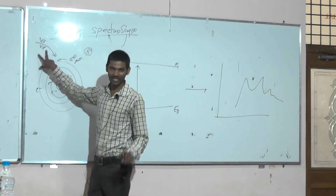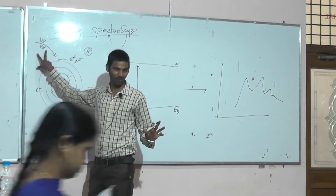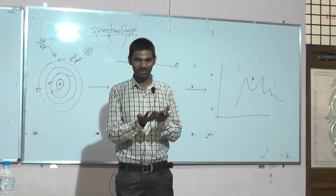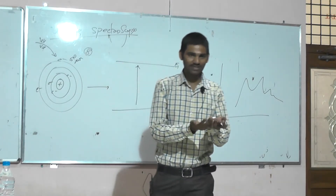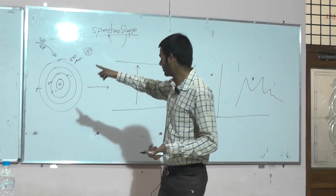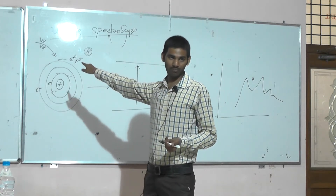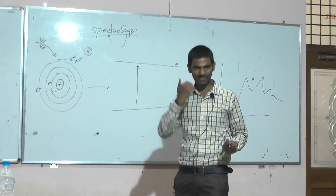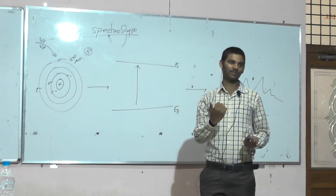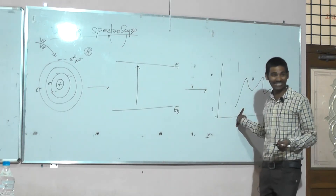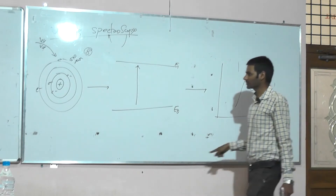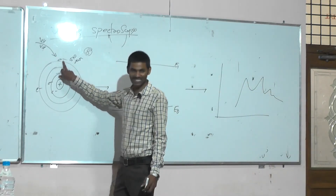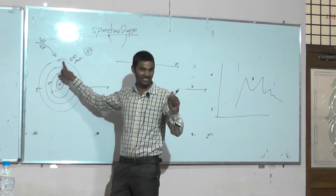The valency electron absorbs the radiation. But if I have 10 compounds, will 10 compounds give the same spectra and absorb the same energy? No. Based on the property of the compound, it absorbs a specific amount of energy and gives corresponding characteristic spectra. So here, the absorption by the valency electron is characteristic.